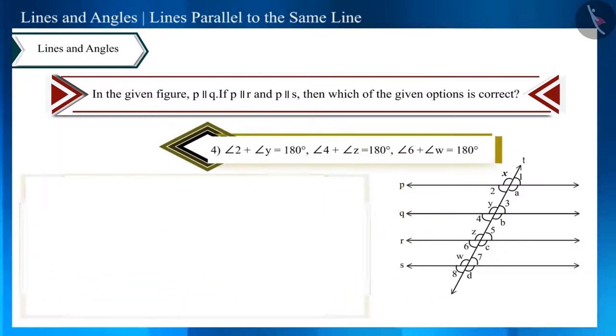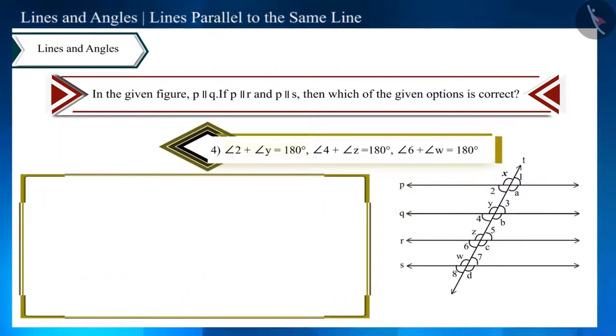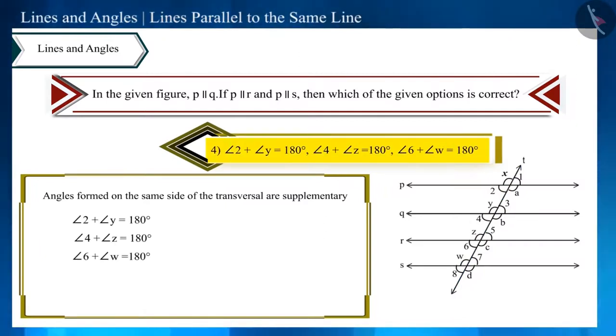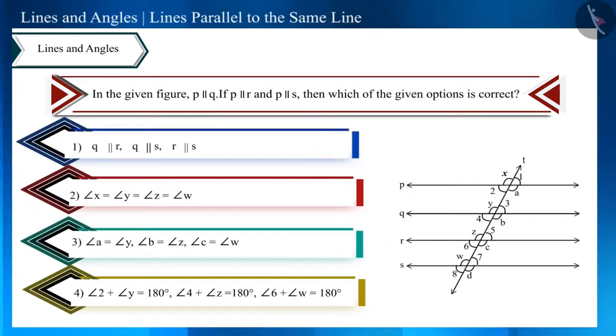Now look at the fourth and the last option. Here it is given that the sum of these angles is 180 degrees. By looking at the figure, we can see that these angles are interior angles formed on the same side of the transversal. We have learned that the sum of these angles is 180 degrees. Therefore, this option is also correct.